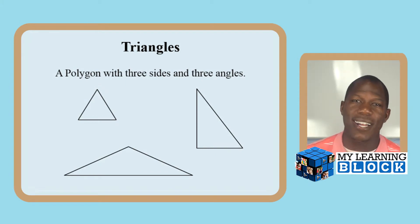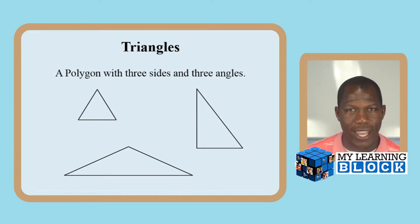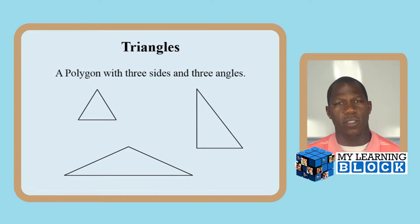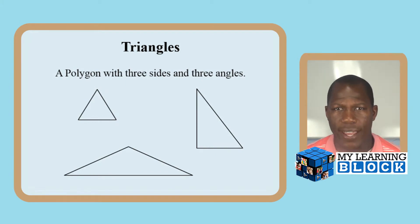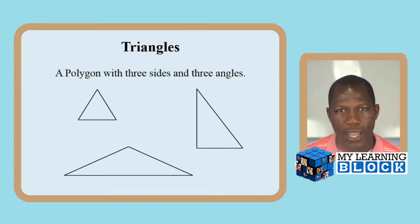So a triangle, as you are aware, is a polygon that has three sides or three angles. Henceforth the word tri — triangle — three angles.